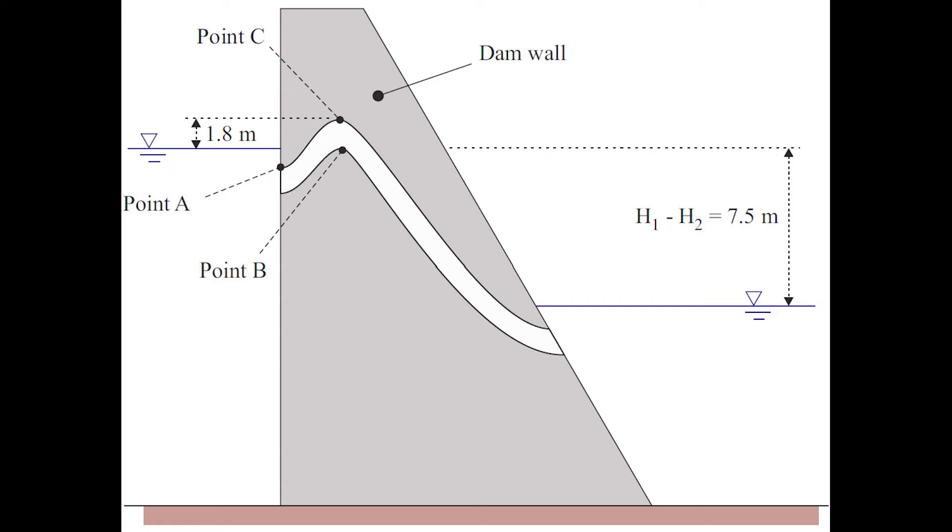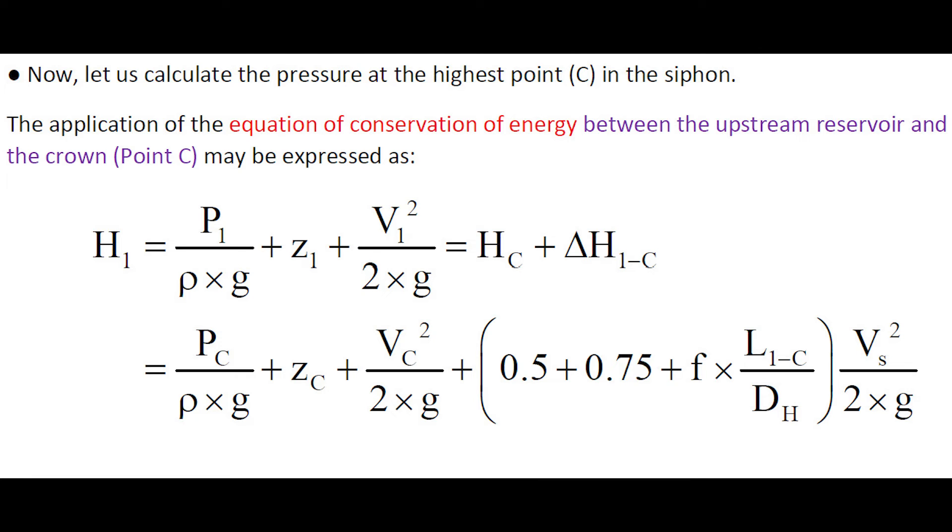Now let us consider the pressure at the highest point C in the siphon. The application of the equation of conservation of energy between the upstream reservoir and the crown, point C, is shown here.